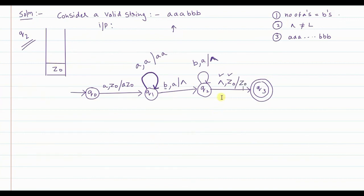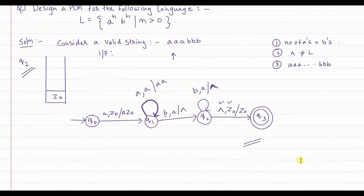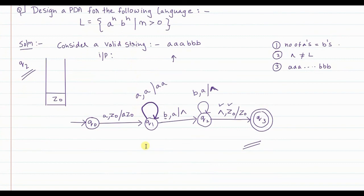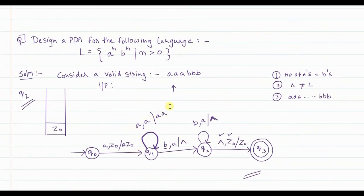One additional note: if the language were L = {a^n b^n | n ≥ 0}, then the null string would also be accepted. In that case, the initial state q0 would also need to be a final state. So the PDA would have two final states: q0 and q3. That is the only difference. Thank you.